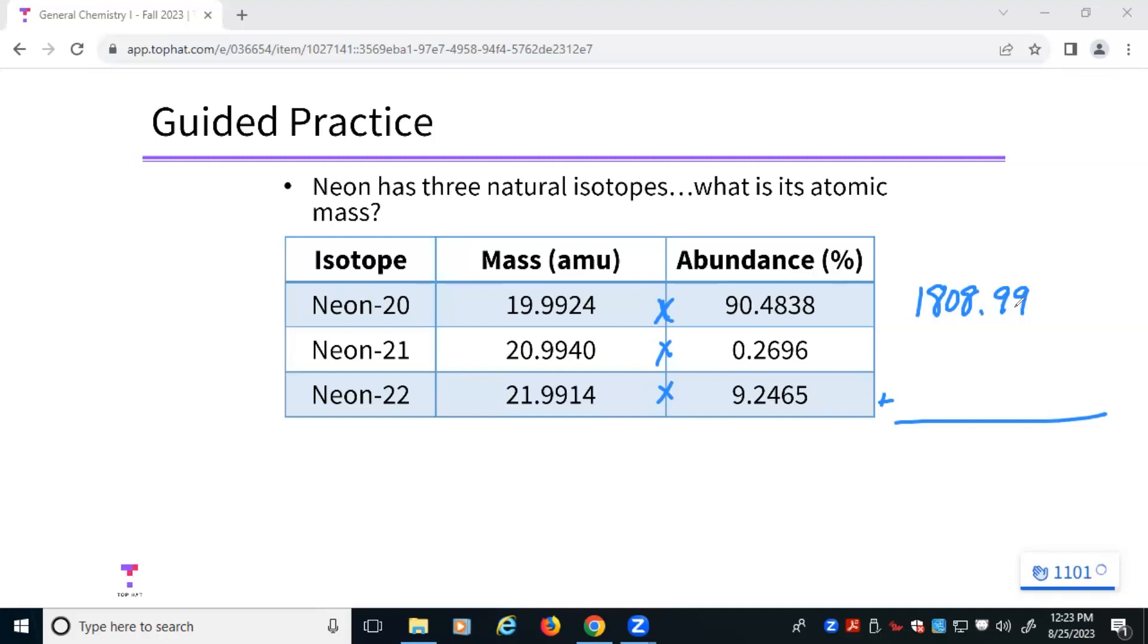Now I'm going to do the same thing for the other values, 20.9940 times 0.2696. This time, I'm only going to round to four digits because you know this mass still has six digits. My percentage only has four digits. So if there's a zero in the front, it doesn't count as a significant digit. So I have four digits here and six. I've got to round to four digits there. And that's going to give me 5.660. And then lastly, 21.9914, multiplied by 9.2465. This time, I'm going to round to five digits because my percentage only has five digits instead of six. So 2.0334.